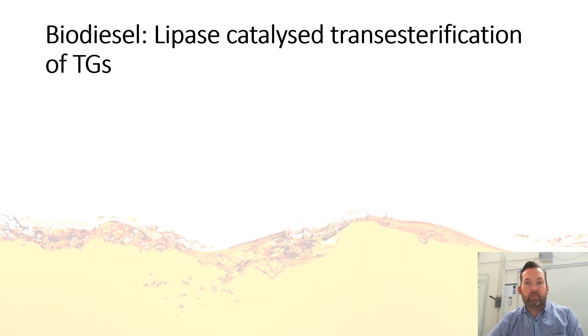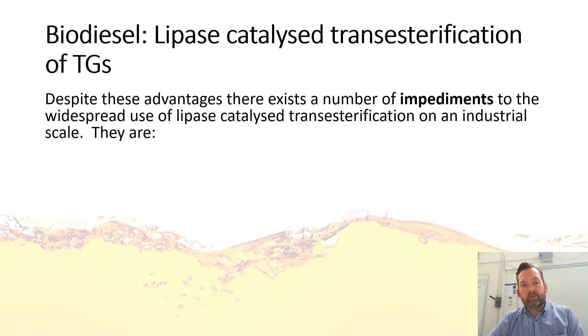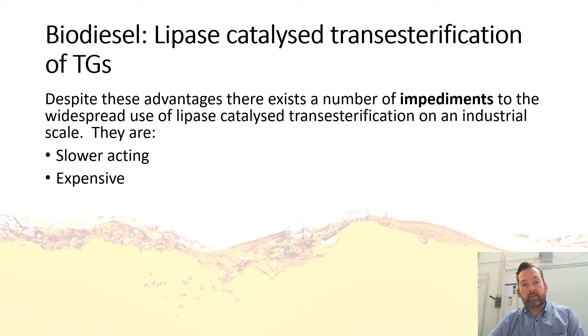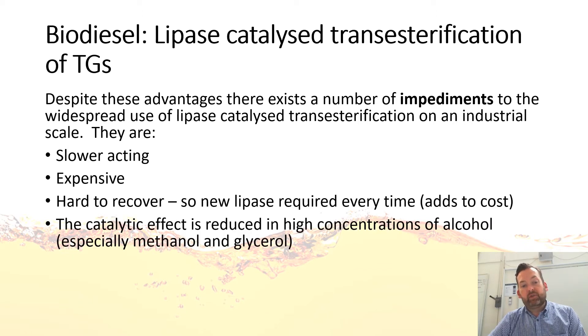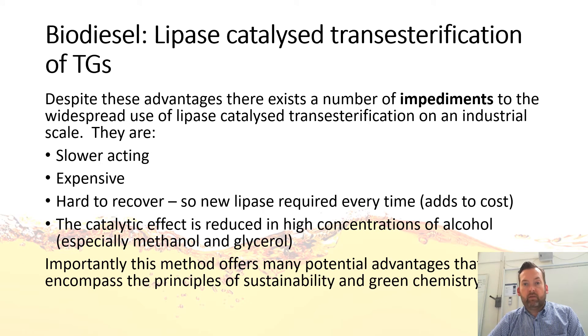However, there are impediments. The lipase process is much slower than the sodium hydroxide method, and in industry, speed is key. It's also more expensive — the catalyst must be completely replaced each time and is costly to obtain. Additionally, the catalytic effect is reduced at high alcohol concentrations, so the enzyme doesn't work well under those conditions. Despite significant economic barriers, from an environmental perspective this is a much more preferred process. Hopefully this overview has helped clarify biodiesel production via both sodium hydroxide and lipase methods, including the advantages and disadvantages of each.